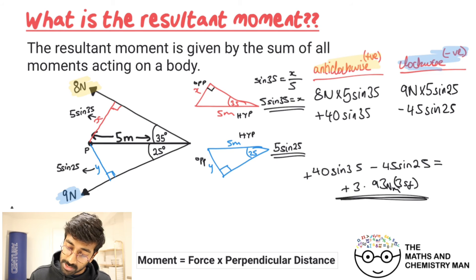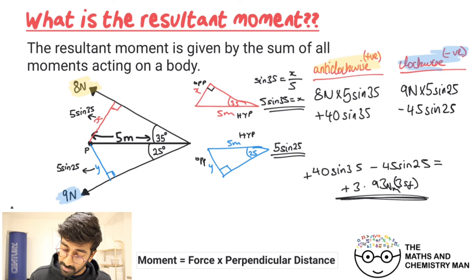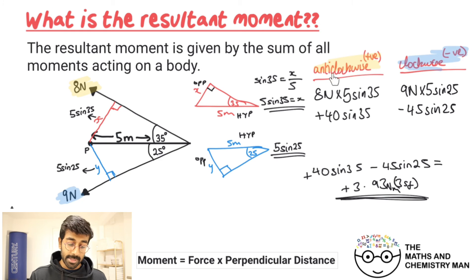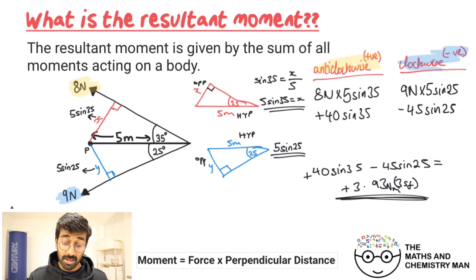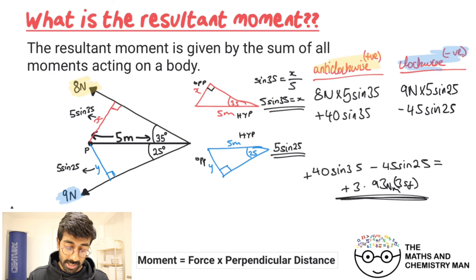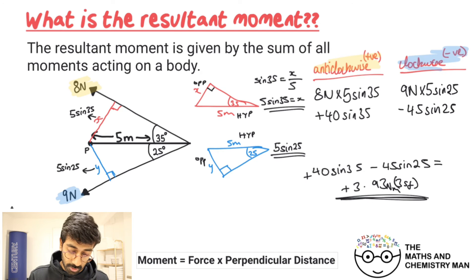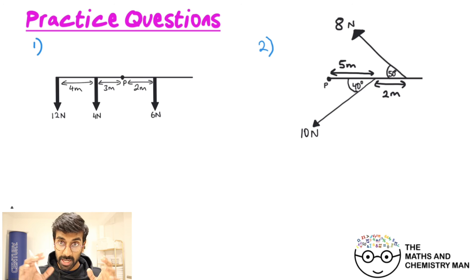The result comes out as a positive value, which means the system is turning in the anti-clockwise direction — so the eight Newton force is winning.